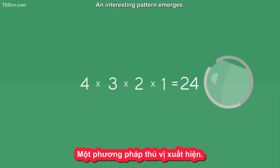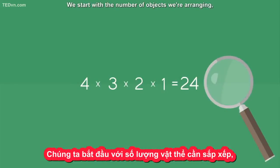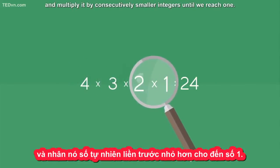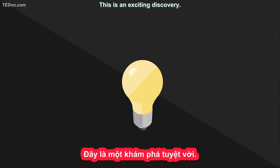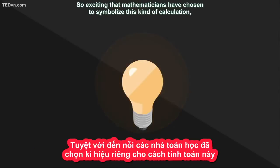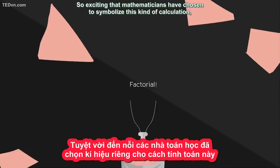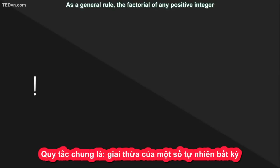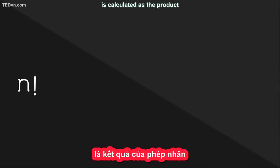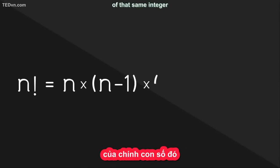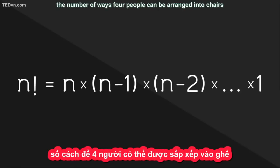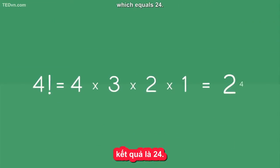An interesting pattern emerges. We start with the number of objects we're arranging — four in this case — and multiply it by consecutively smaller integers until we reach one. This is an exciting discovery, so exciting that mathematicians have chosen to symbolize this kind of calculation, known as a factorial, with an exclamation mark. As a general rule, the factorial of any positive integer is calculated as the product of that same integer and all smaller integers down to one. In our simple example, the number of ways four people can be arranged into chairs is written as four factorial, which equals 24.